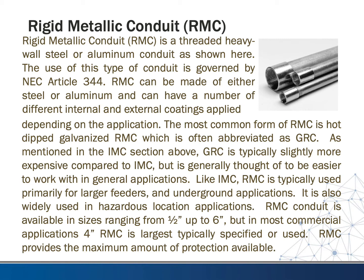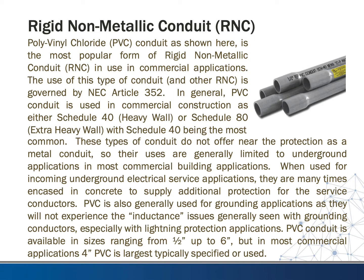Rigid metallic conduit, or RMC, is a threaded, heavy-wall steel or aluminum conduit. Its use is governed by NEC Article 344. RMC can be made of steel or aluminum and can have various internal and external coatings depending on the application. The most common form is hot-dipped galvanized steel RMC, often abbreviated as GRC. GRC is typically slightly more expensive than IMC but is generally considered easier to work with. Like IMC, RMC is primarily used for larger feeders, underground applications, and hazardous location applications. It is available in sizes from half-inch to six-inch, with four-inch being the largest typically specified. RMC provides the maximum amount of protection available for conductors.